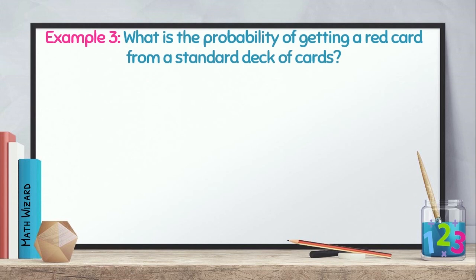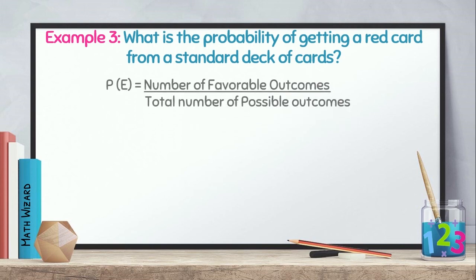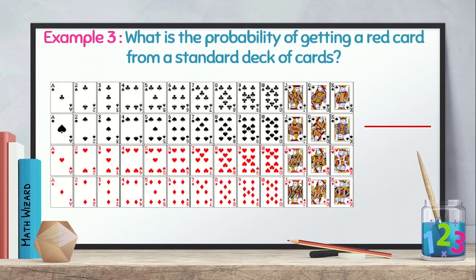Let's now move on to example number 3. What is the probability of getting a red card from a standard deck of cards? We write first the formula, P of E, equal to the number of favorable outcomes and the total number of possible outcomes. Based from our problem, it was stated standard deck of cards. So, we need to examine what is the total number of standard deck of cards.